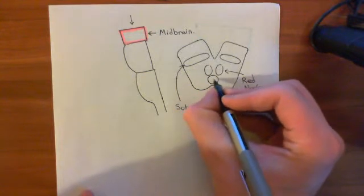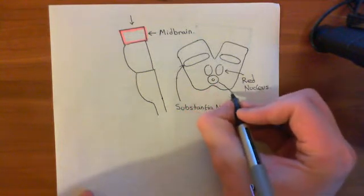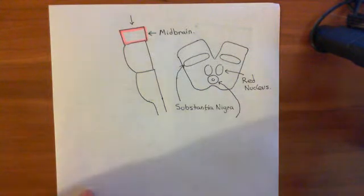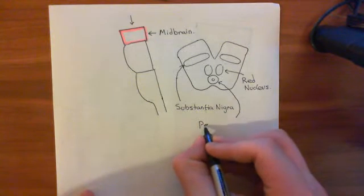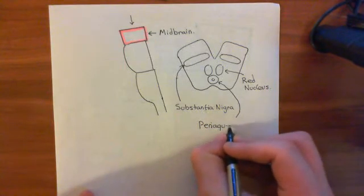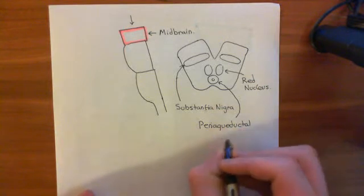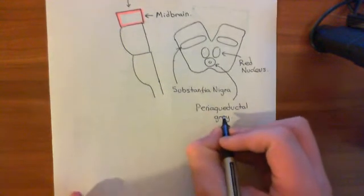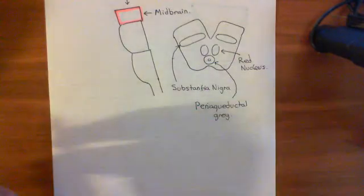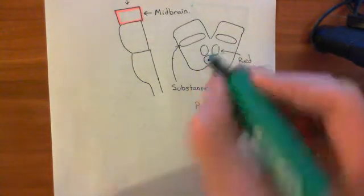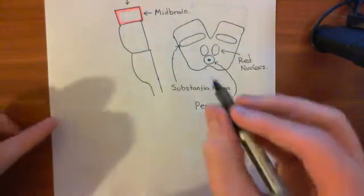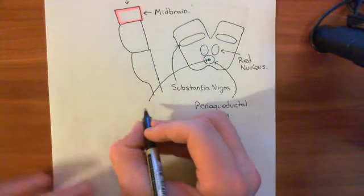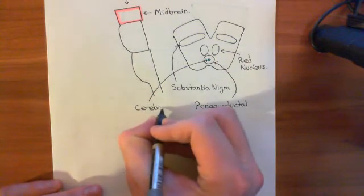And then underneath this, you have a structure known as the periaqueductal grey. This is the bit that always ends up looking like a pig when I draw it. So this looks like the snout of a pig when I draw it. This is known as the periaqueductal grey. Peri means around. Aqueductal means pertaining to an aqueduct. And grey refers to its colour. So it's around this little tube in the middle. This in the middle here is what's known as the cerebral aqueduct. This goes through the midbrain and then down into the fourth ventricle.